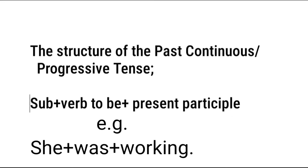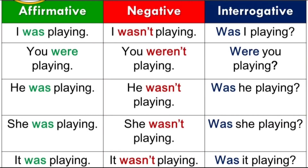The structure of the past continuous tense is: subject + verb to be + present participle. For example, 'She was working' — 'She' is the subject, 'was' is the verb to be, and 'working' is the present participle. Let's study the positive, negative, and interrogative forms. Positive: I was playing. Negative: I wasn't playing. Interrogative: Was I playing? Here, the subject and the verb interchange — 'I was playing' becomes 'Was I playing?'